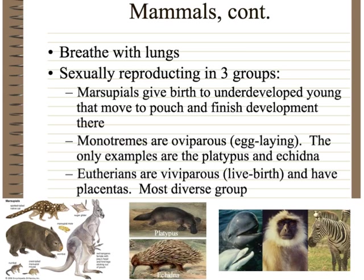Monotremes are egg-laying — the word for that is oviparous. These are the monotremes: the platypus and the echidna, also called the spiny anteater. They lay eggs but also produce milk and have hair, so they are considered mammals. The last group is the eutherians, also called the placental mammals, which have live birth. Their young are attached to the mother via the placenta during pregnancy. This is the most diverse group, with a wide variety of different species.